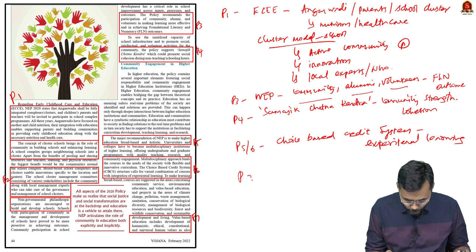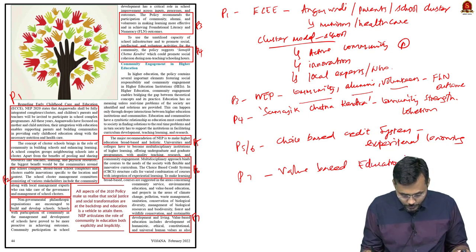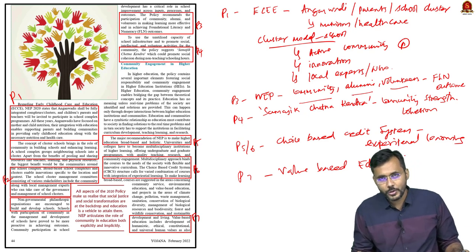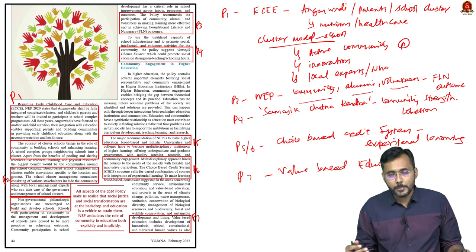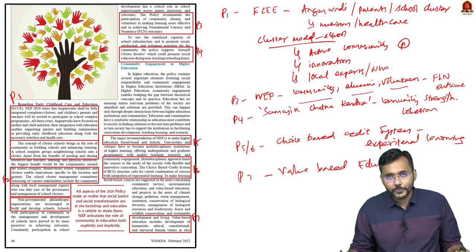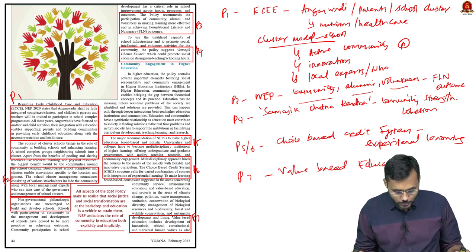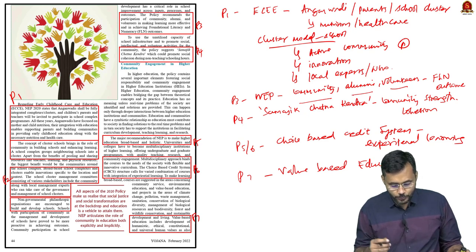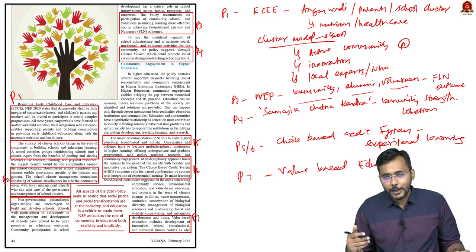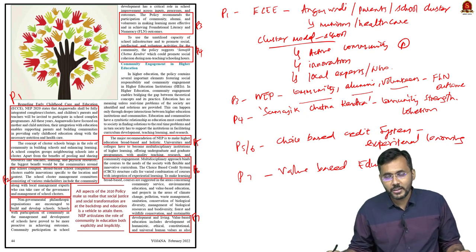Paragraph 7 focuses on value-based education, also called ethical education. Value-based education enables people to understand societal, political, universal human, and constitutional values, making them good citizens. Many social problems can be solved through value-based education — for example, a child with proper value-based education understands that corruption, harming fellow human beings, and crimes against women are all unethical. Value-based education thus has a huge impact on addressing social problems.